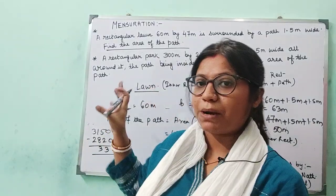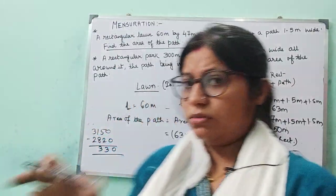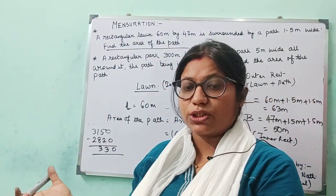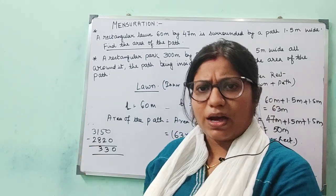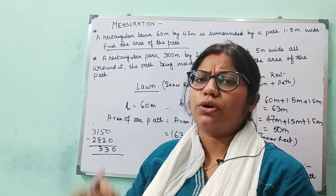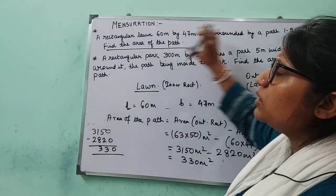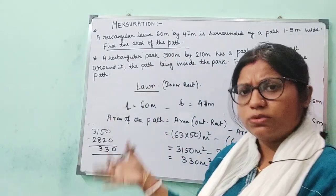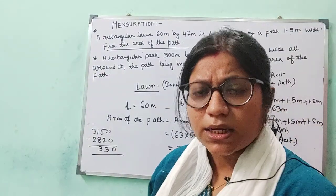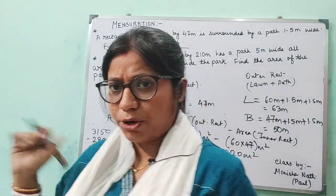Sometimes this question is accompanied with an additional part — what will be the cost of constructing the path if the rate of construction is given? A particular rate of laying gravels or putting grass is given, and you will be asked to find the total cost. Once you know the rate and the area, you simply find the product to get the required cost.